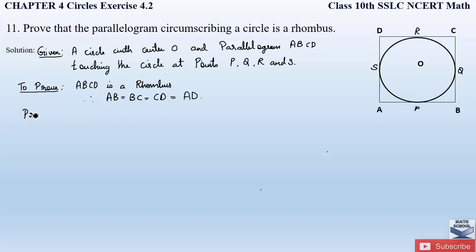Now let us write the proof. There are four external points to this circle: points A, B, C and D. Using these four external points we can apply theorem 4.2, which states that the lengths of tangents drawn from an external point to a circle are equal. From point A the two tangents are AS and AP. From point B the tangents are BP and BQ. From point C the tangents are CQ and CR. From point D the tangents are DR and DS. So using theorem 4.2, the tangent lengths from each external point are equal.